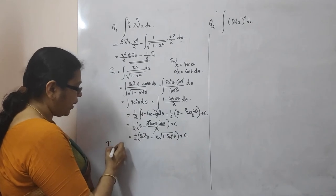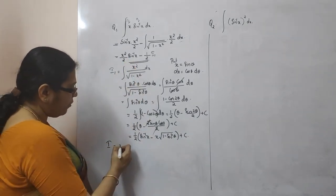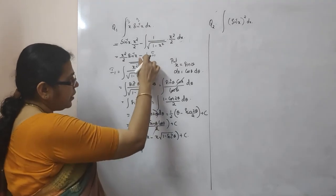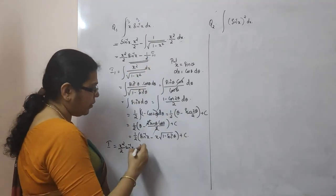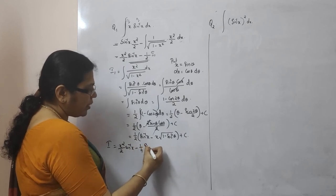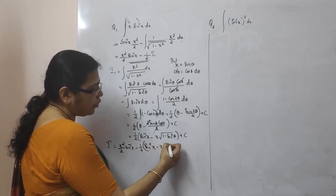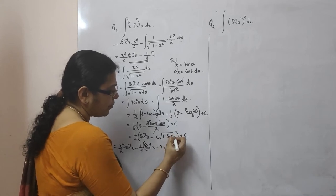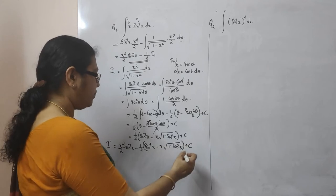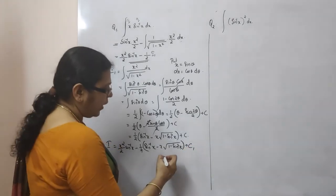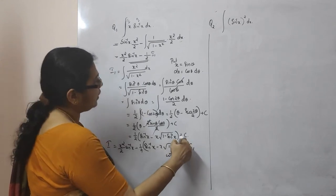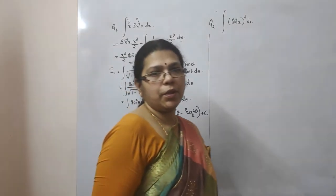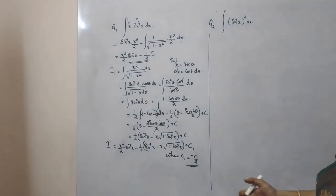Combining everything, the integral I equals x²/2 · sin⁻¹(x) minus 1/4 · [sin⁻¹(x) − x·√(1−sin²x)] plus c₁, where c₁ = −c/2. Go through it once or twice to make sure it is clear.